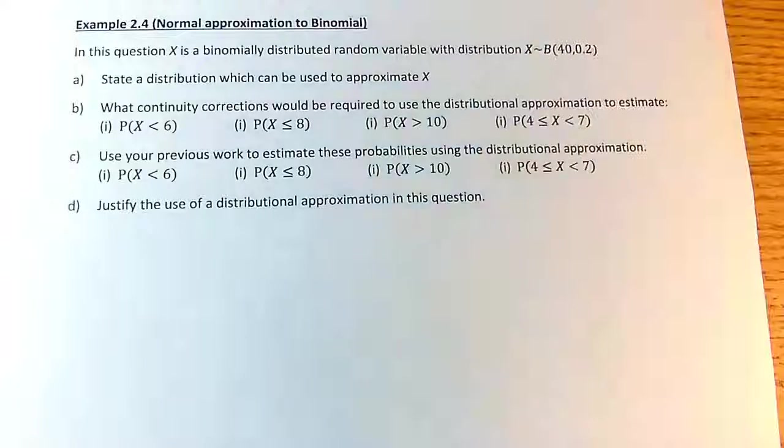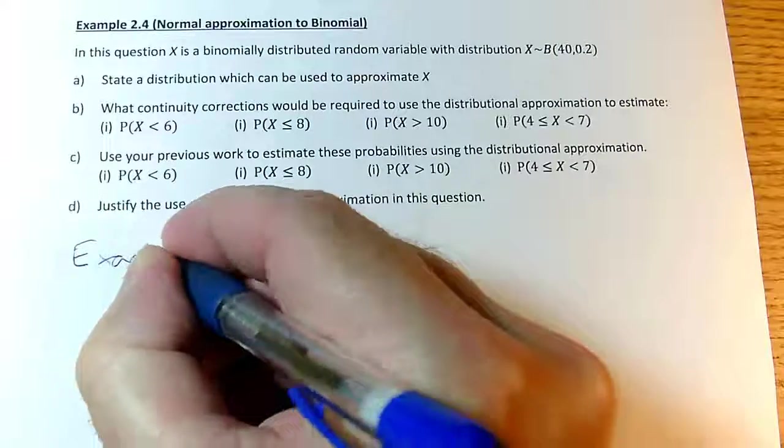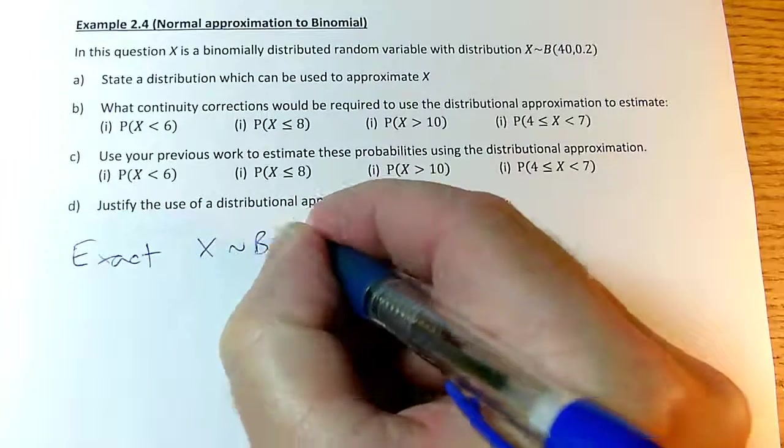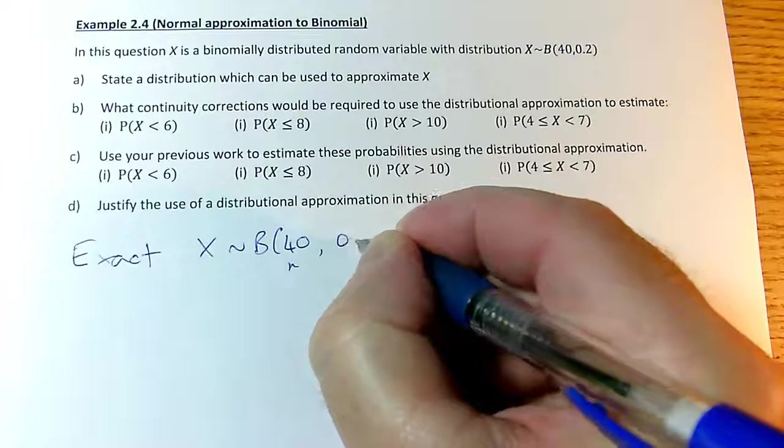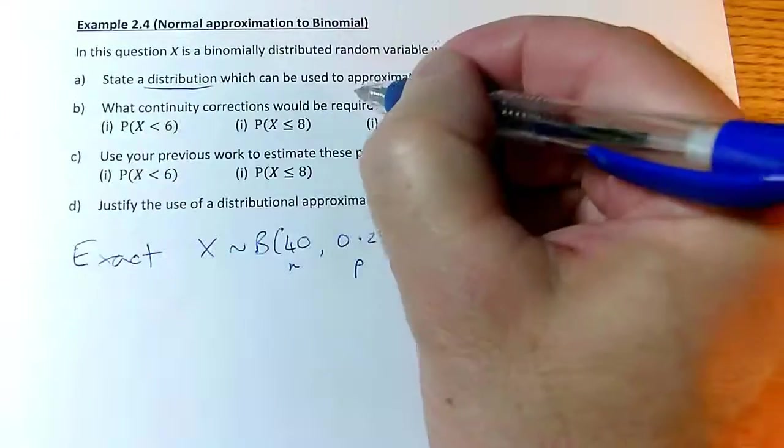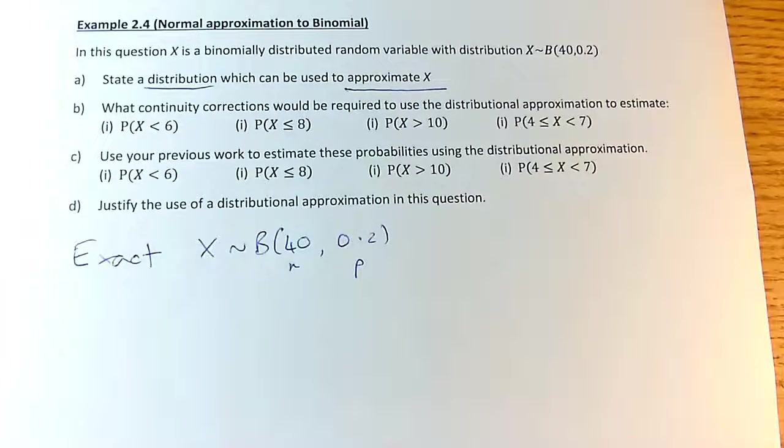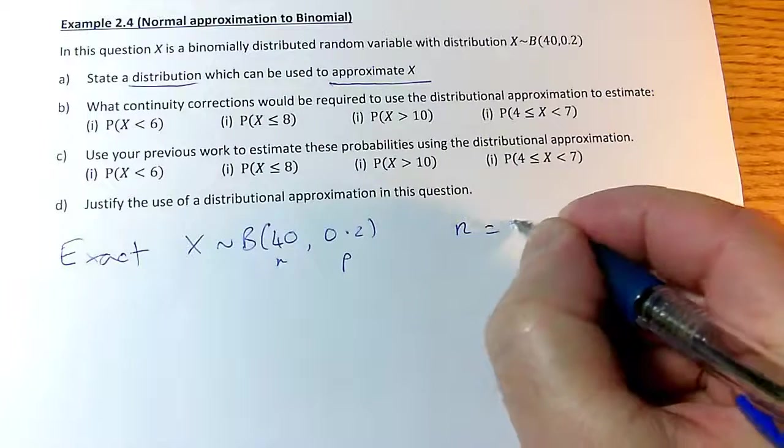This question is about this binomial distribution here. So I've got an exact distribution, which is as given, X is a binomial with an n of 40 and a p of 0.2. And I'm being asked a distribution that will approximate X, so it's a distributional approximation. So I look at my n, n is 40.